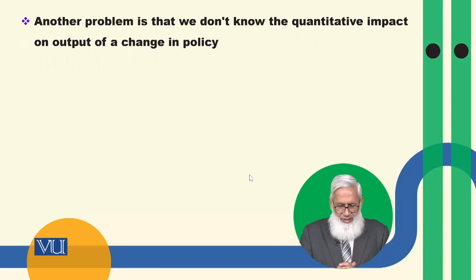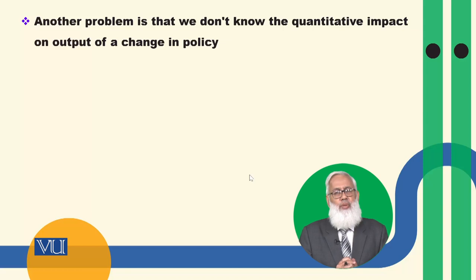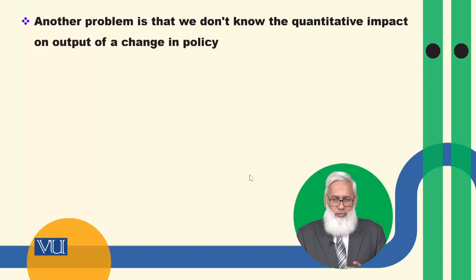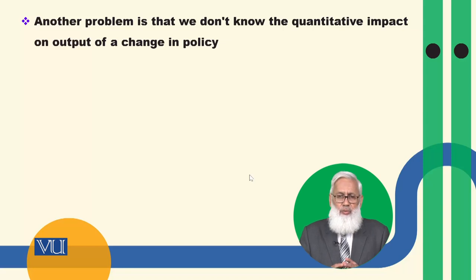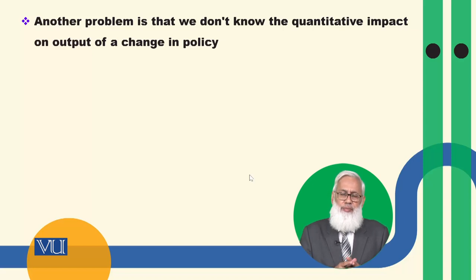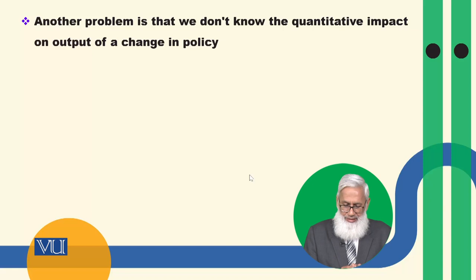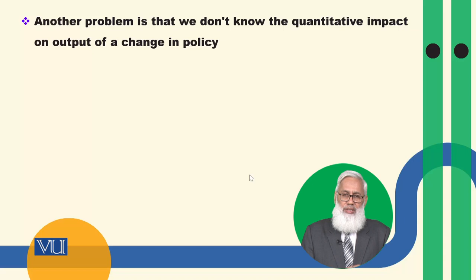Another problem is that we don't know the quantitative impact on output of a change in policy. Money supply या government spending को change करने से macro-economic variables किस तरह effect होंगे — direction तो easy है, कि money supply बढ़ाने से output बढ़ेगी — लेकिन कितनी money supply बढ़ने से कितनी output बढ़ेगी, इसको quantify करना obviously easy task नहीं है।